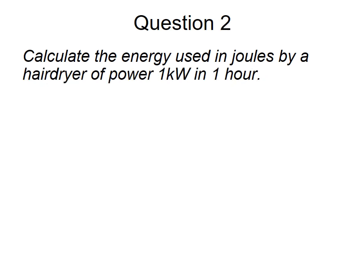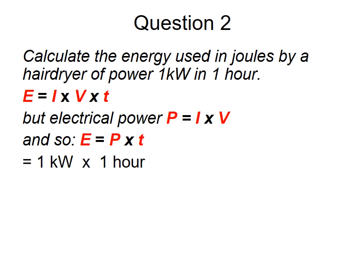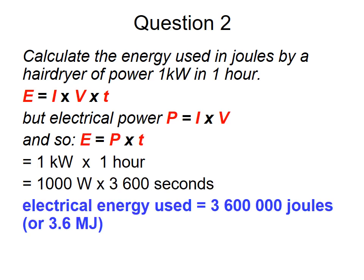Question 2: Calculate the energy used in joules by a hairdryer of power 1 kilowatt for 1 hour. Since power equals IV, we can write E equals P times T. Be careful with units: 1 kilowatt equals 1000 watts, and 1 hour equals 3600 seconds. So E equals 1000 times 3600, giving 3.6 megajoules. That's a lot of energy from your hairdryer.